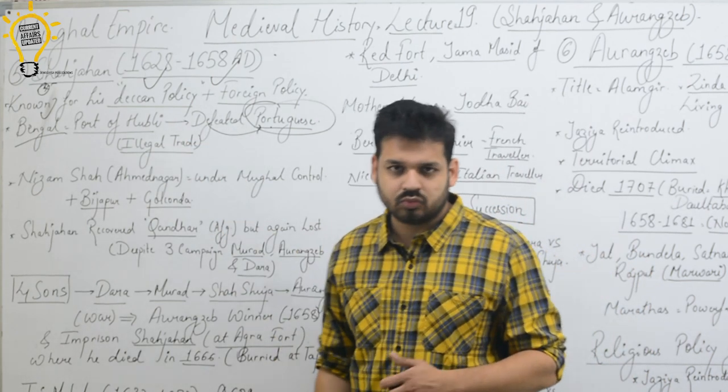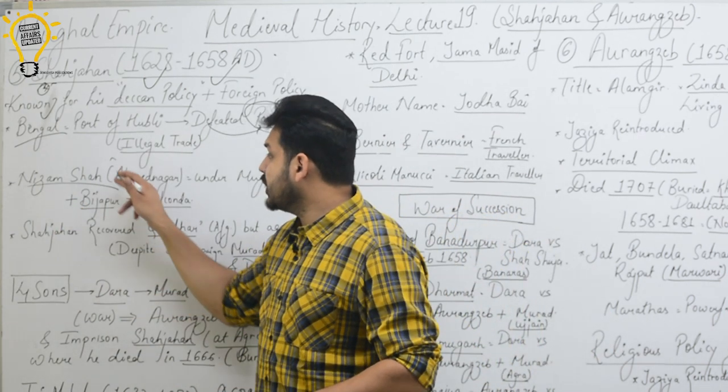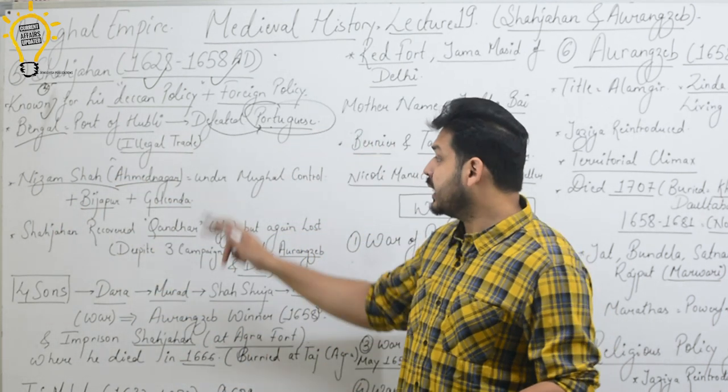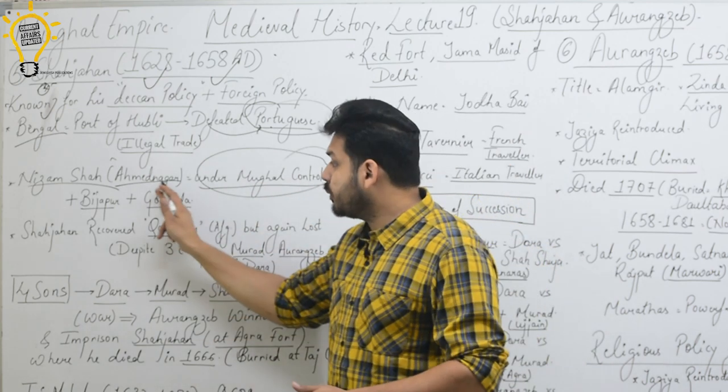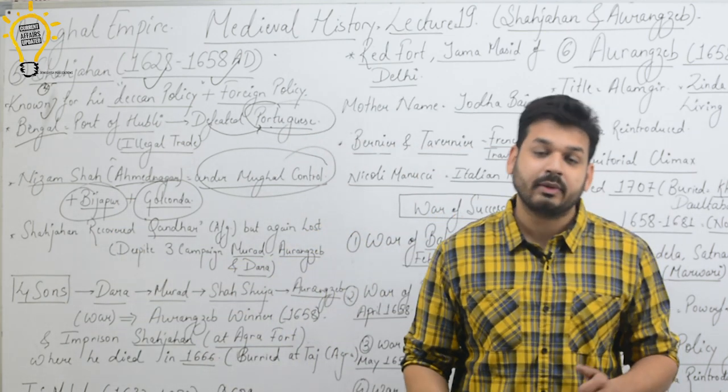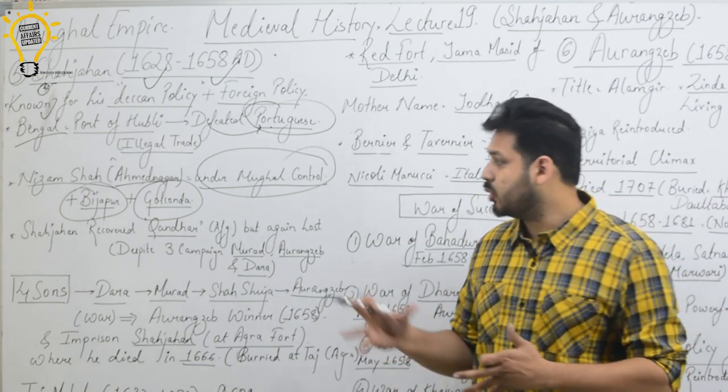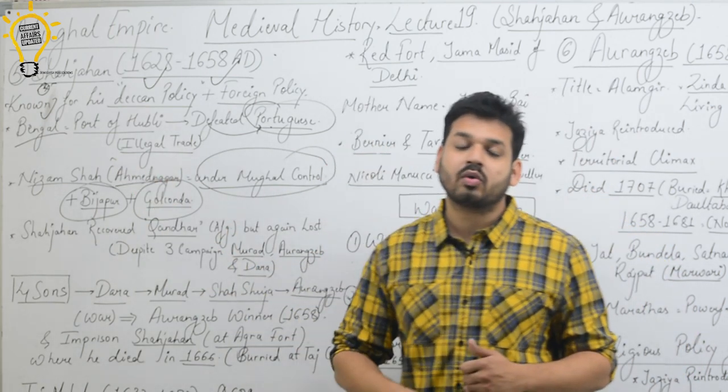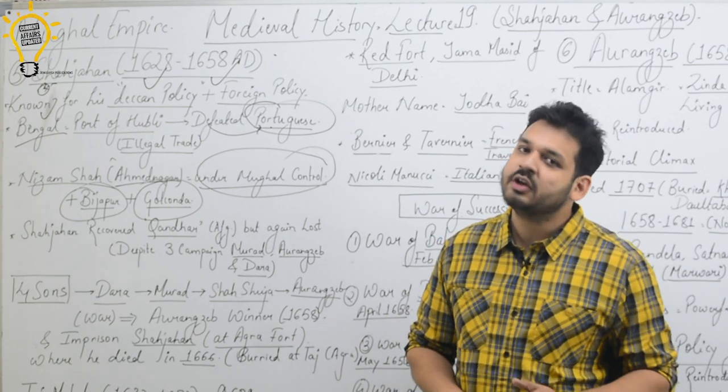If I talk about Deccan policy in which Shah Jahan is very famous, Nizam Shahi of Ahmednagar was under Mughal control. Even Bijapur and Golconda had surrendered to the Mughal Empire. In the south, Bijapur, Golconda, and Ahmednagar were coming under the Mughal Empire at the time of Shah Jahan.